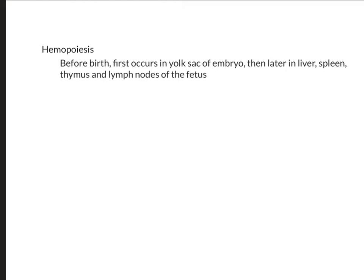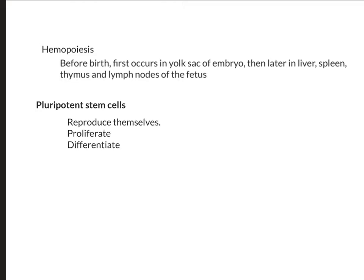In children, all bone marrow is red. While adults still do have some red bone marrow, most of it has turned yellow as it has become adipose tissue. Pluripotent stem cells have the ability to reproduce themselves, proliferate — which means they can increase rapidly in numbers — and also differentiate into different types of cells. Red blood cells and platelets do not divide once they leave the red bone marrow. However, lymphocytes will continue to divide after they leave.